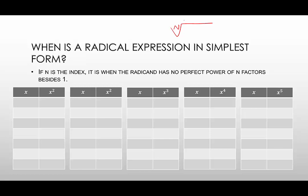n is the index, and the radicand has no perfect powers of n factors besides 1. So if n is 3, if it's a cubed root, then we don't want any perfect cubes under the radical, no factors that are perfect cubes.